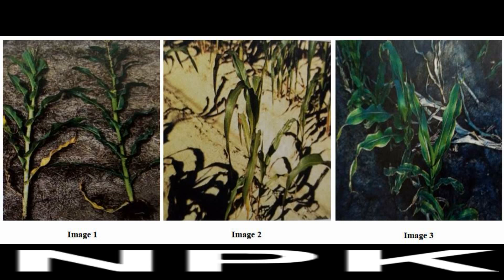In chemistry, nitrogen, phosphorus, and potassium are abbreviated as N, P, and K, respectively. Because we are going to use chemistry and biology, i.e. biochemistry, in agriculture.